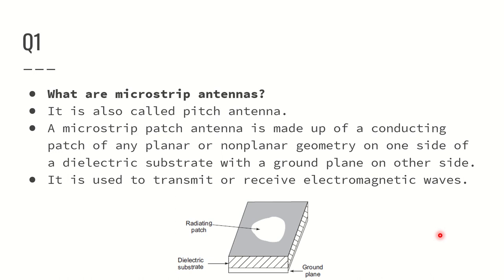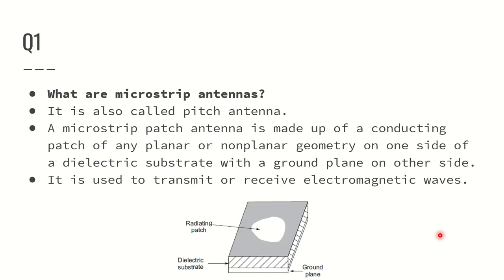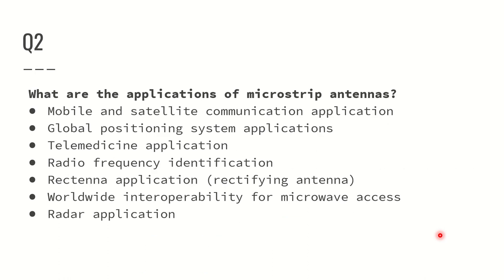What is it meant for? Very simple — it is meant to transmit or receive electromagnetic waves. That is the major purpose of microstrip antennas. What are the applications of microstrip antennas? The applications include mobile and satellite communication, GPS applications, telemedicine applications, radio frequency identification, rectana — which is a rectifying antenna I will talk about shortly — worldwide interoperability for microwave access, and most importantly, radar applications.